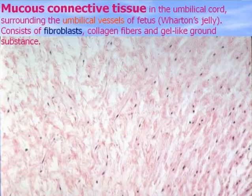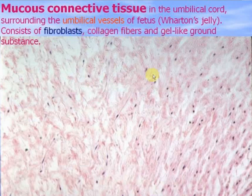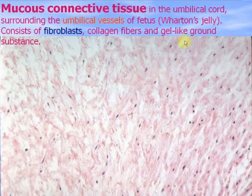Mucous connective tissue is available only in embryogenesis, in the umbilical cord of the fetus. It surrounds the umbilical vessels of the fetus and is called Wharton's jelly. It consists of specialized fibroblasts, a few collagen fibers, and a lot of gel-like ground substance.